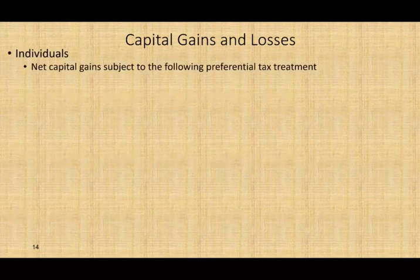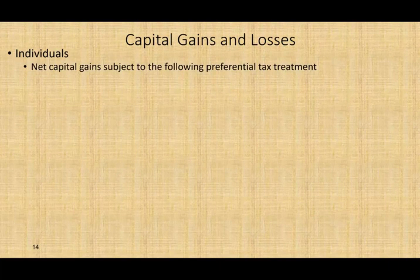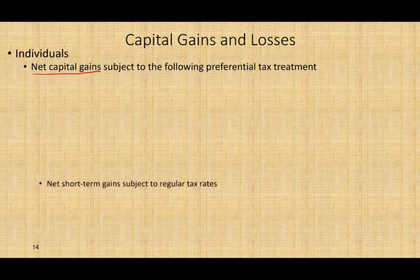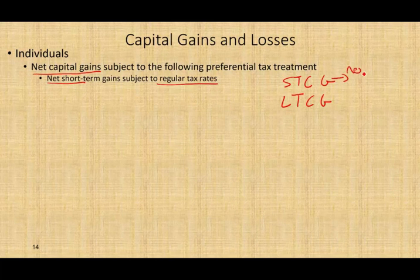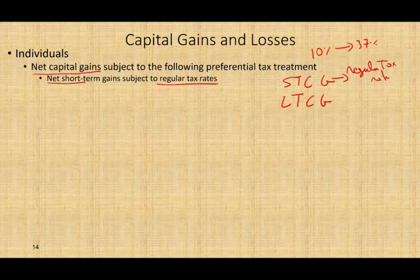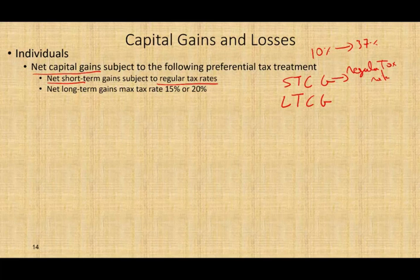For individuals, the net capital gain is subject to preferential treatment. If it's a short-term capital gain, it is taxed as ordinary income — based on your regular tax rate, which can go from 10% up to 37%, depending on your tax bracket. For long-term capital gains, they can be taxed at 0%, 15%, or 20%, depending on your tax bracket. I won't go over the specific brackets here as they were covered in detail in a prior chapter.